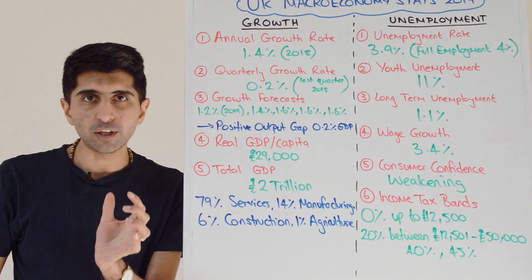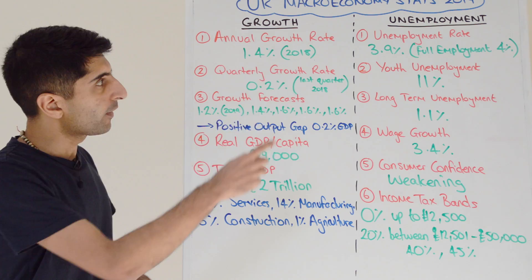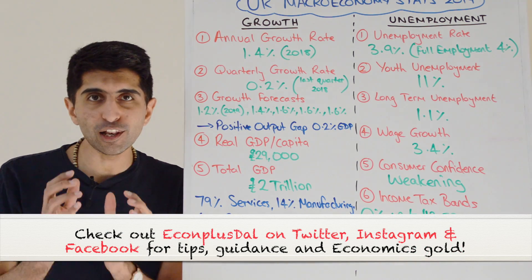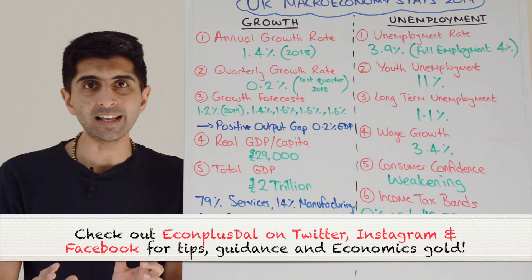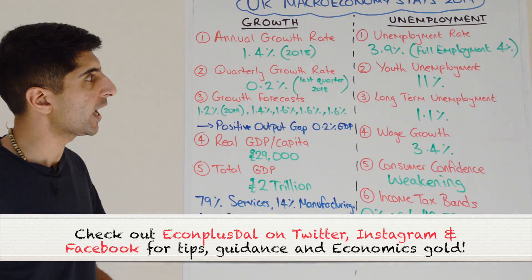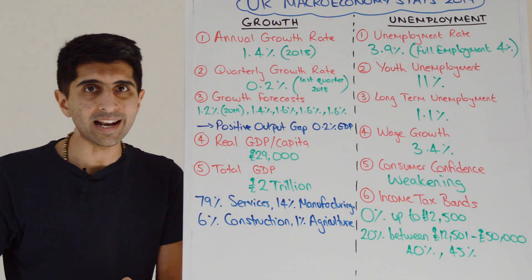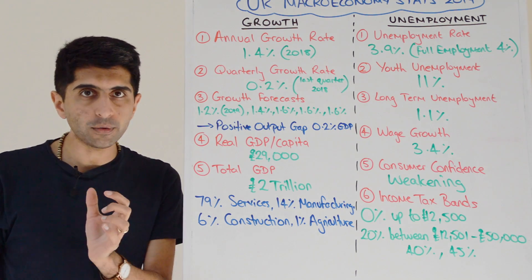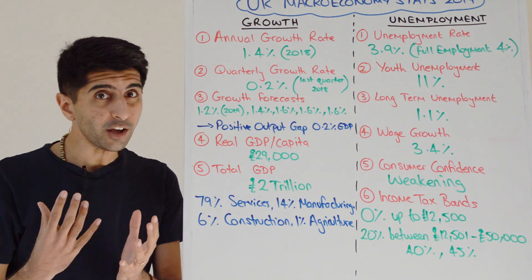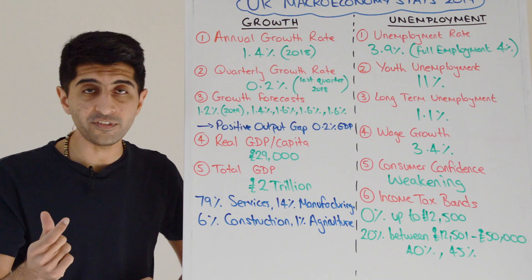We're going to start by looking at growth and unemployment in the UK. The UK annual growth rate in 2018 was only 1.4% — the lowest annual growth rate we've seen since our last recession. That's the impact Brexit is having on the UK economy. The quarterly growth rate — growth in the last quarter of 2018 — was only 0.2%. We're flirting with recession territory; that's close to a negative figure.